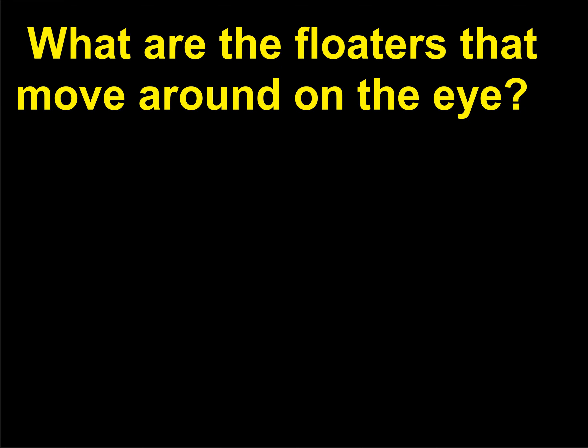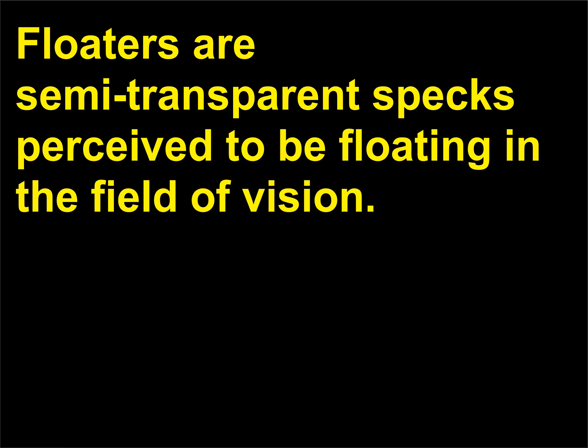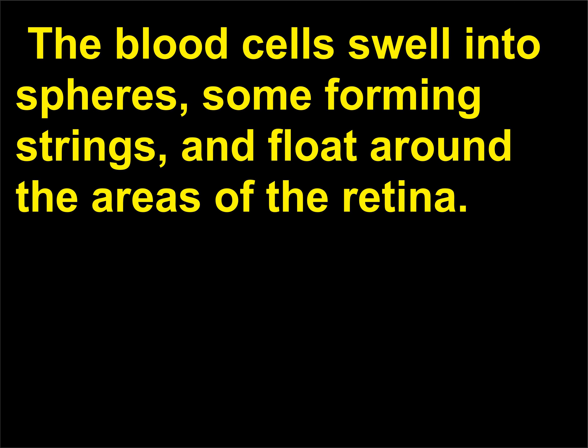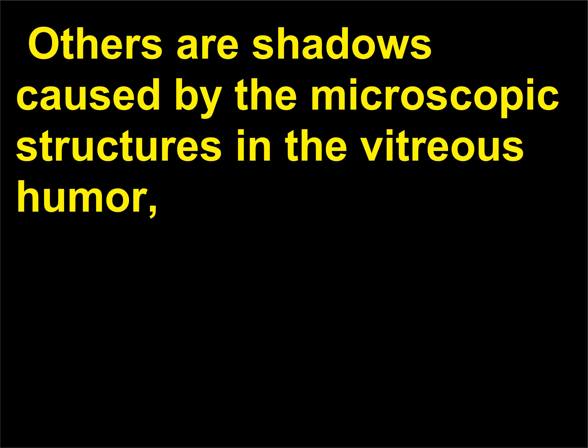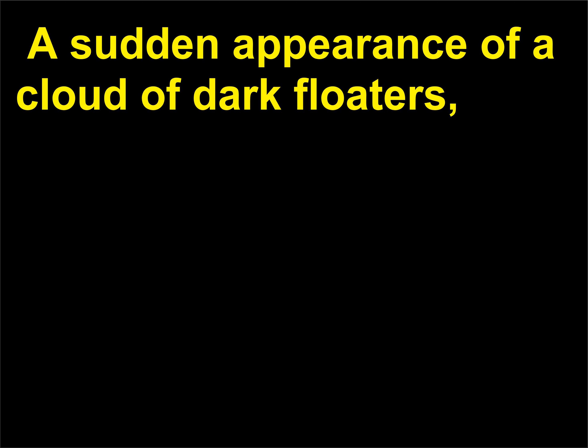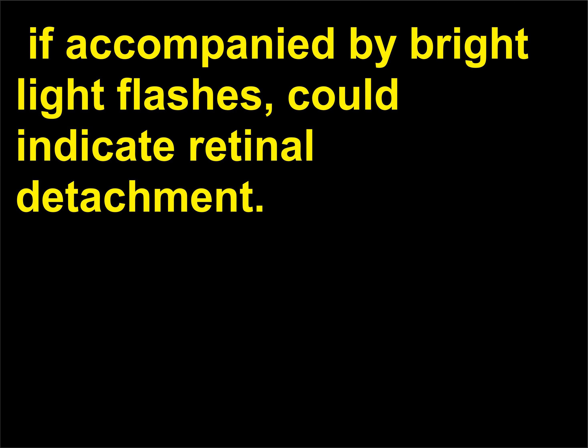Floaters are semi-transparent specks perceived to be floating in the field of vision. Some originate with red blood cells that have leaked out of the retina; the blood cells swell into spheres, some forming strings, and float around the areas of the retina. Others are shadows caused by microscopic structures in the vitreous humor, a jelly-like substructure located behind the retina. A sudden appearance of a cloud of dark floaters, if accompanied by bright light flashes, could indicate retinal detachment.